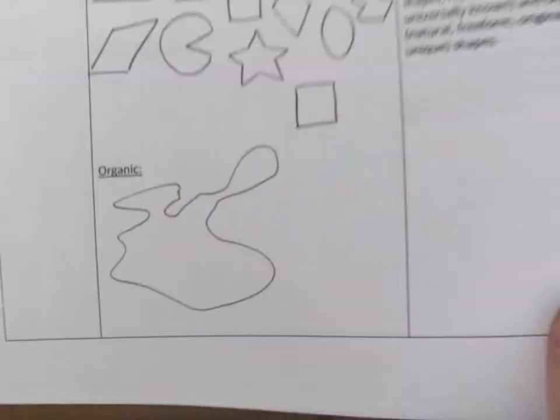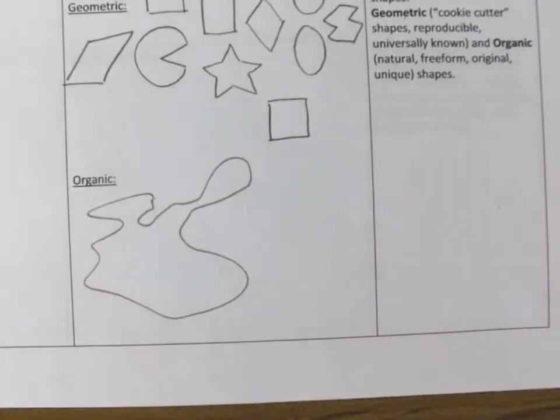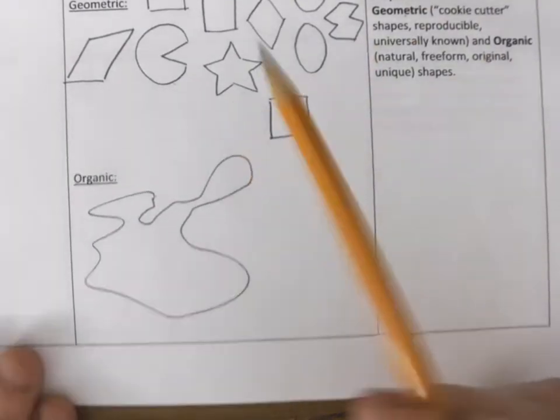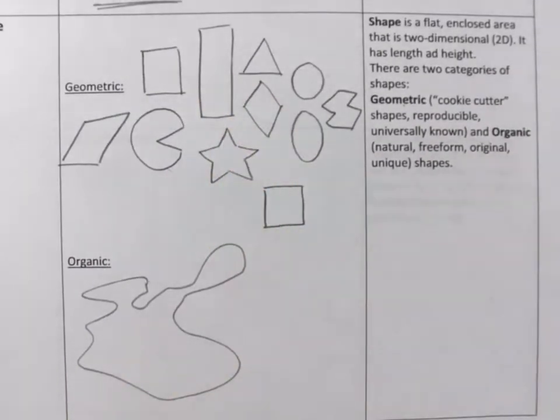So we call it organic. And in the natural world, we usually see organic shapes everywhere, as opposed to geometric shapes. If the world was made up of geometric shapes, we would look like we live in Lego worlds. But we don't.